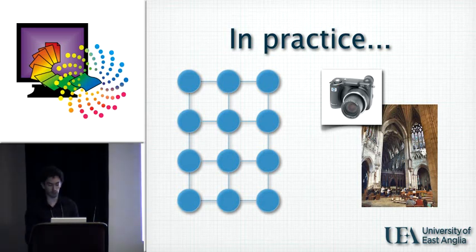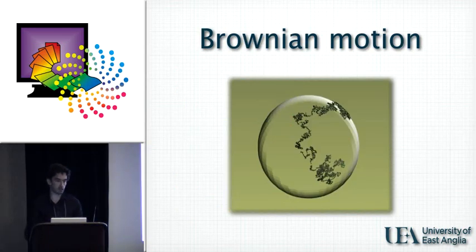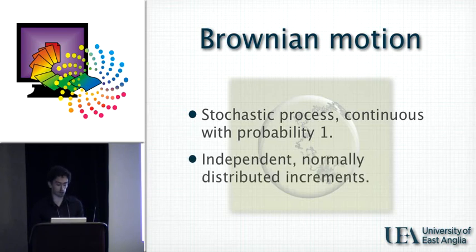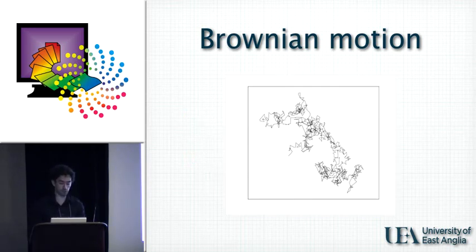So what is Brownian motion? Brownian motion is the apparently random movement of particles suspended in a fluid, and it's modeled as a stochastic process — continuous, almost certainly continuous — and having independent and normally distributed increments. In practice, if we run a simulation such as this one, we have for each time step a random increment in the X and one in the Y direction, and they are independent between each other and independent of time.